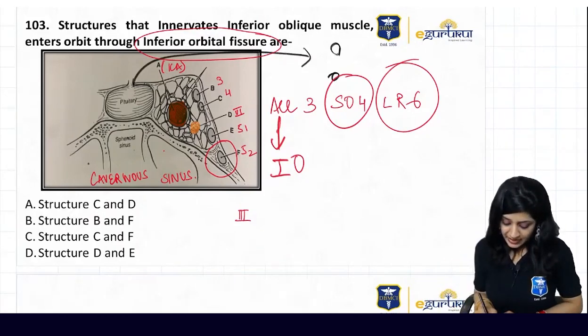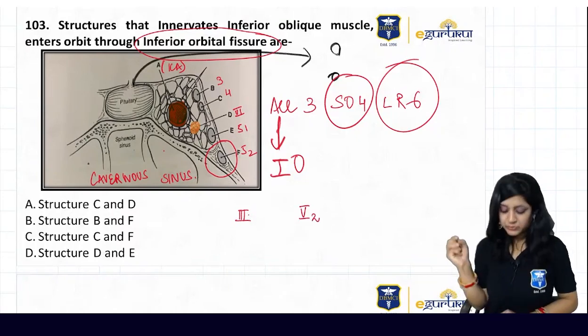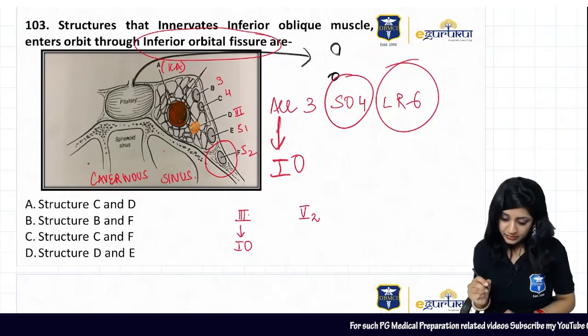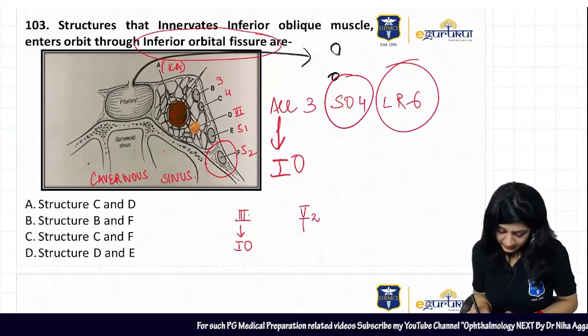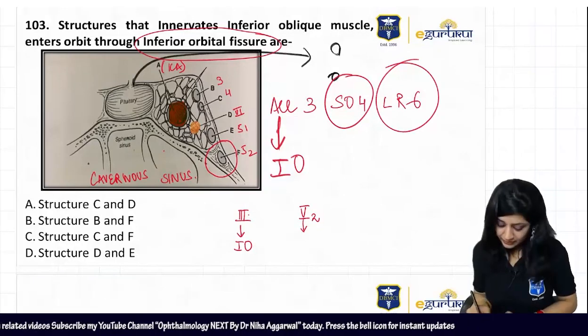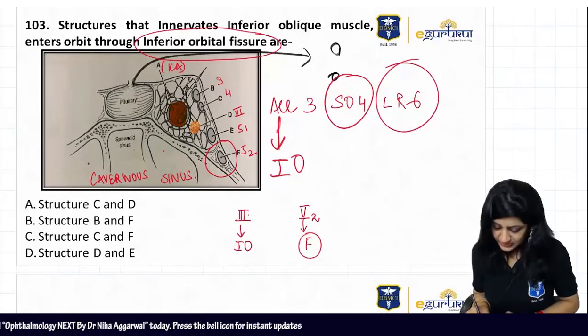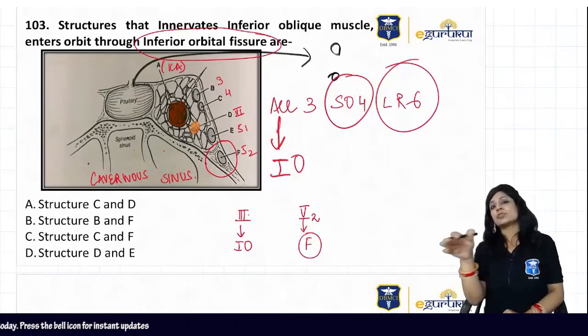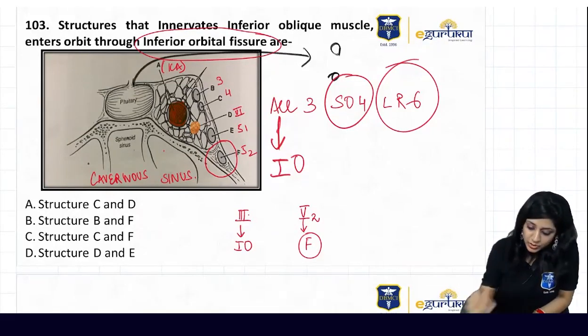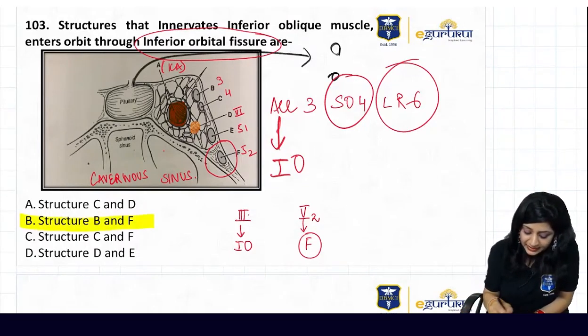So we have third nerve and we have the second division of the fifth nerve, because third nerve supplies the inferior oblique. And this is your fifth nerve, which is the F, which is actually passing through the inferior orbital fissure. So what should be the answer? So answer to this question will be your B and F.